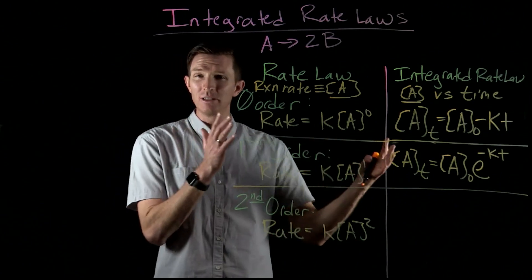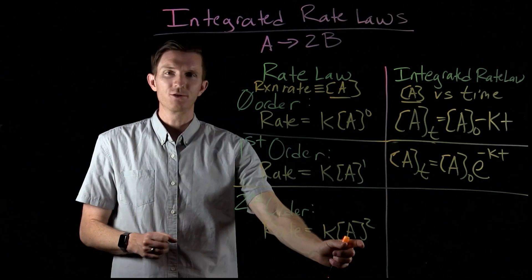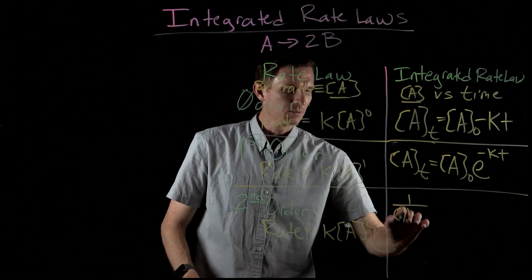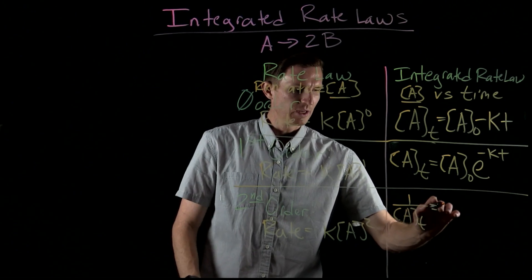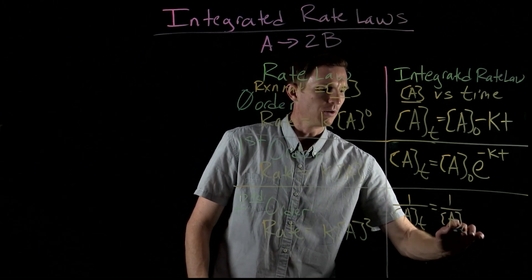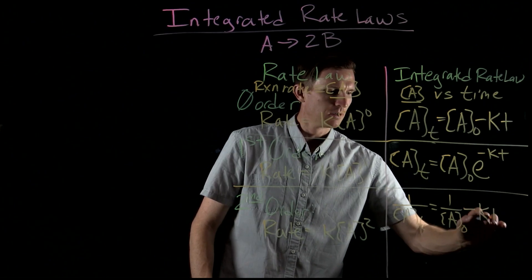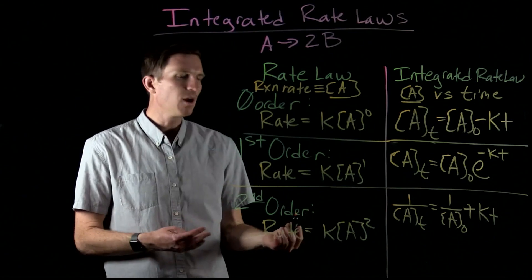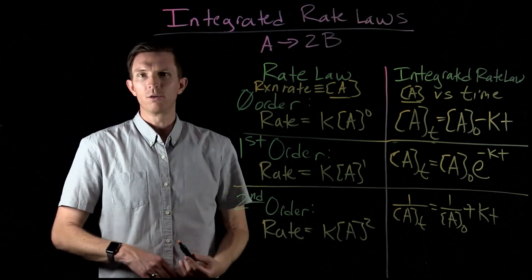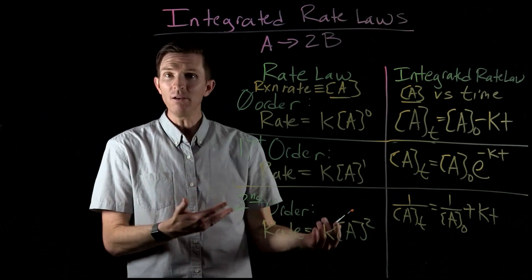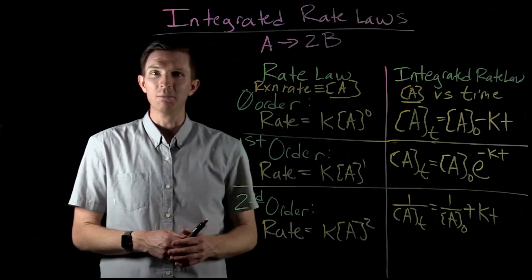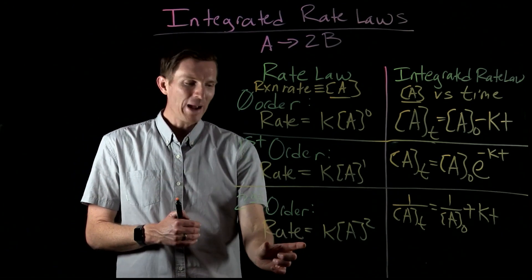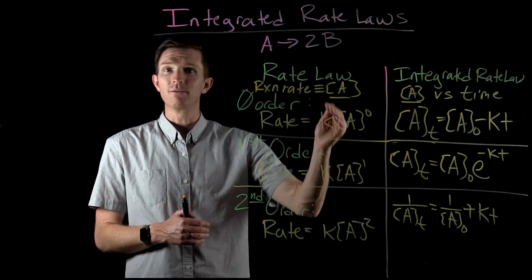For second order kinetics, the rate depends differently on the concentration of reactant A. If we integrate this, we get: one over A at some time equals one over our original concentration plus KT. So we see that zero, first, and second order reactions have different behaviors in how their concentrations change over time, and that has a direct relationship to the fact that their rates depend on the concentration of A in differing ways.